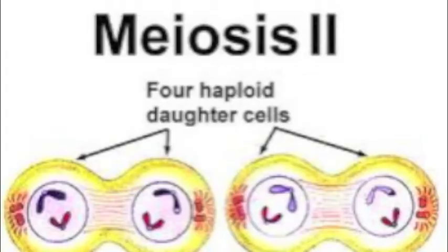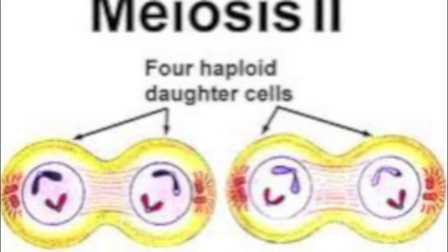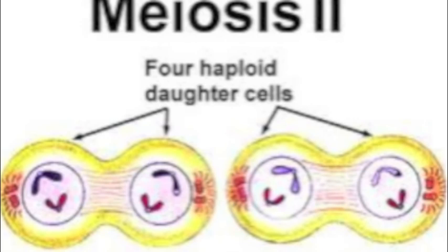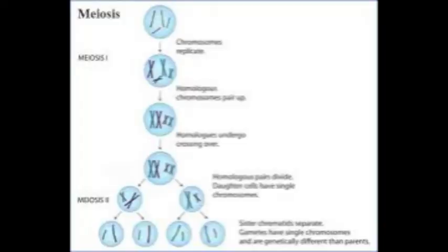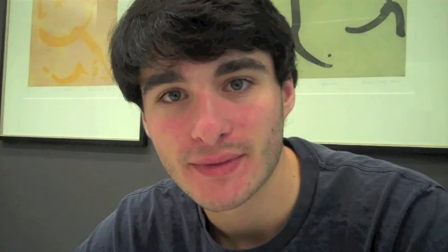And next is anaphase 2 — this is where the chromatids split. Then telophase 2 is very similar to telophase 1, as the chromosomes begin to unravel in the newly formed nuclear membrane and the spindle apparatus disappears. Then the membrane is pinched and four haploid daughter cells are made through cytokinesis. And as a result of meiosis, we have four distinct haploid cells.